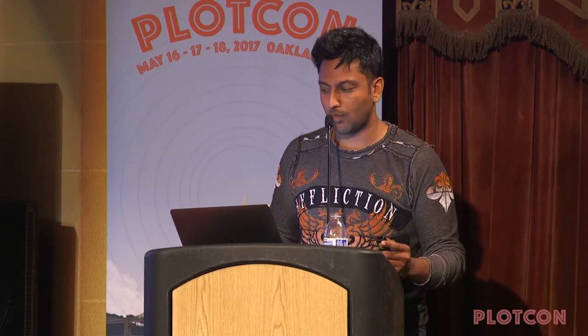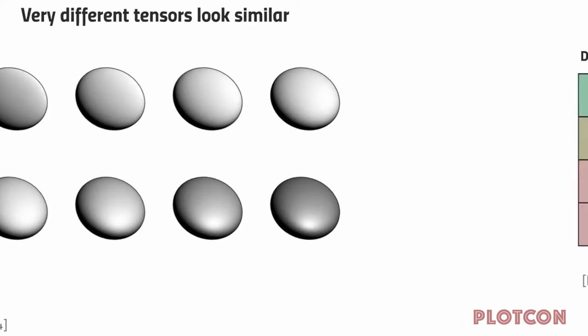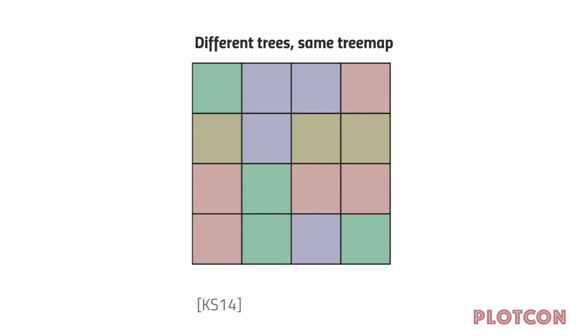Another example of confusion: different data, same appearance. Tensors are simply high-dimensional objects. All of these tensors are substantially different on top, but due to bas-relief ambiguity they look substantially similar — that is confusion. Different tree maps: the trees have different connectivity, but they generate the same tree map. A parallel coordinates plot: two completely different datasets, but they generate the same plot.